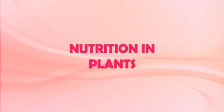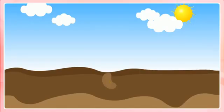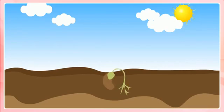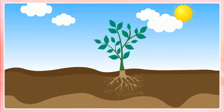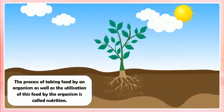Nutrition in Plants. All the living organisms require food. The organisms need to take food to obtain energy, to obtain material for growth, and to obtain materials for the repairs of damaged parts of the body. The process of taking food by an organism as well as the utilization of this food by the organism is called Nutrition.